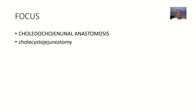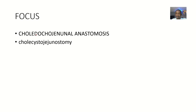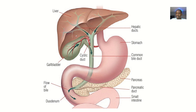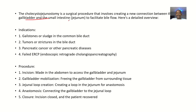The next surgery we're looking at is the choledochojejunal anastomosis, or choledochojejunostomy. If you look at this word, they are talking about two structures. It's usually an anastomosis between the gallbladder and the small intestine, and the part of the small intestine they always use is the jejunum.